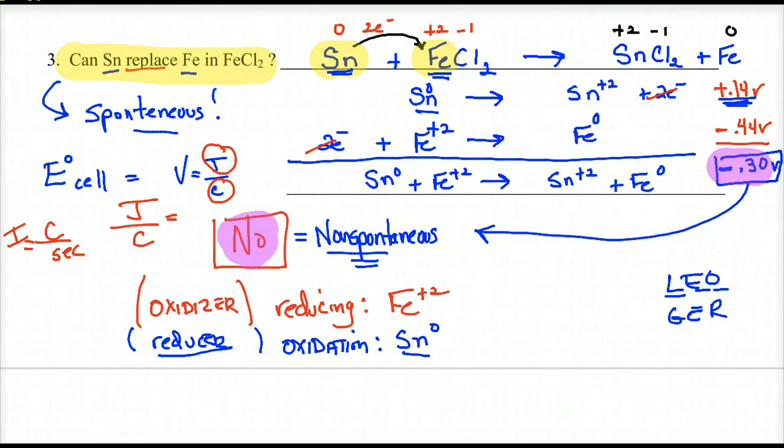In fact, it tells me that the reaction actually goes spontaneously in the reverse. See, negative volts means to make this go in this direction, we'd have to add exactly 0.30 volts to make it go. So that's how we do this. All right, hope that helped.